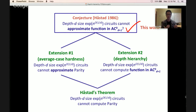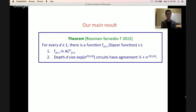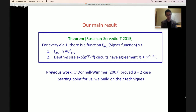Our main result confirms this conjecture. For every depth d, there's a function F_{d+1} (the Sipser function) such that: F_{d+1} is computable in linear size depth d+1 AC0, but depth d circuits of size 2^(n^(1/d)) have agreement with F_{d+1} less than 51% — specifically half plus 1/poly(n) for fixed d. The d=2 case was proved by O'Donnell and Wimmer in 2007; we build on their techniques.